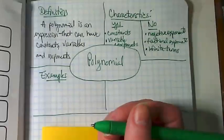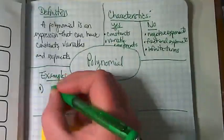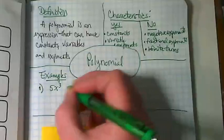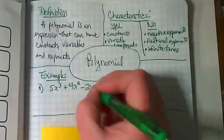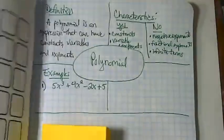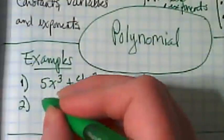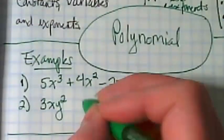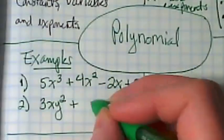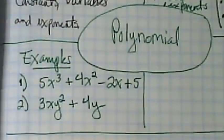Some examples of polynomials: we could have 5x to the third plus 4x squared minus 2x plus 5, or it could be something as simple as 3x squared plus 4y.